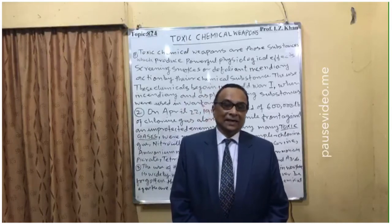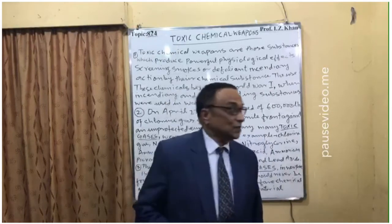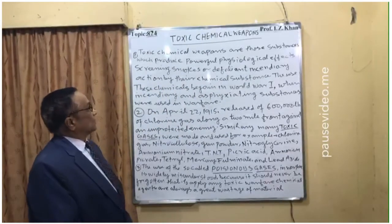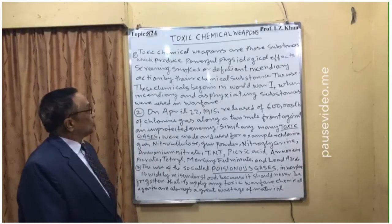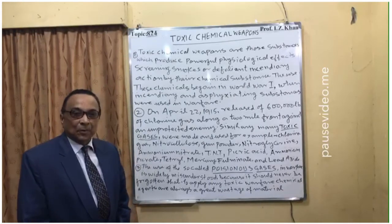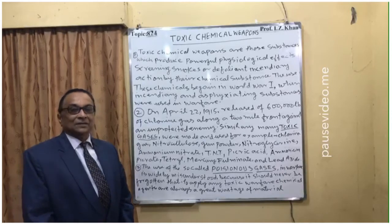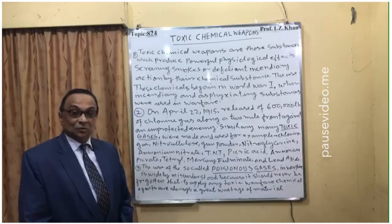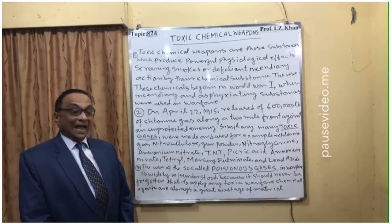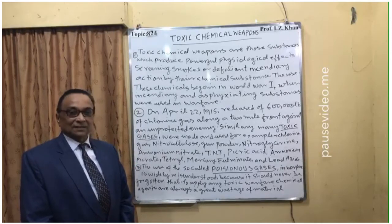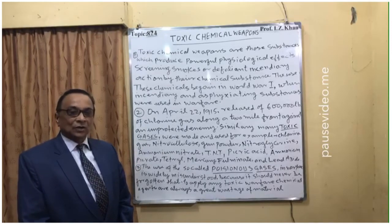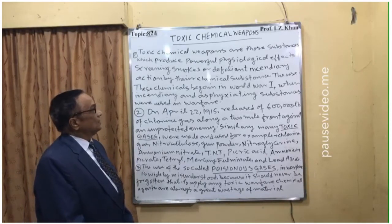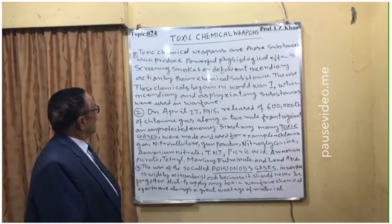Still today, many countries are holding large quantities of dangerous chemical weapons and they are in use. Toxic chemical weapons are those substances which produce powerful physiological effects — your lungs will be affected, your liver will be affected, your throat will be affected — your whole anatomy, physiology, and biology will be affected.